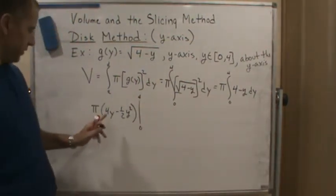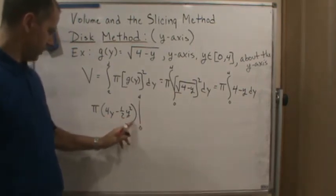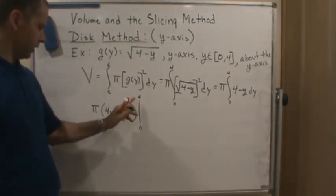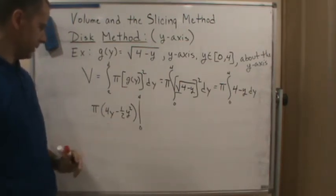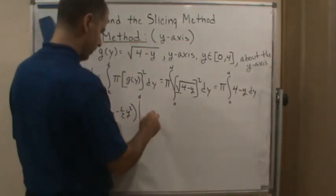Now, since there's a y in each one of these terms at 0, this whole thing is going to go to 0. So it's just going to be something evaluated for minus 0. So let's just evaluate it at 4.